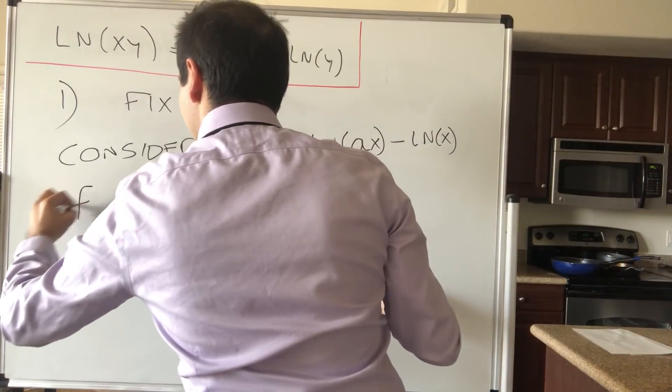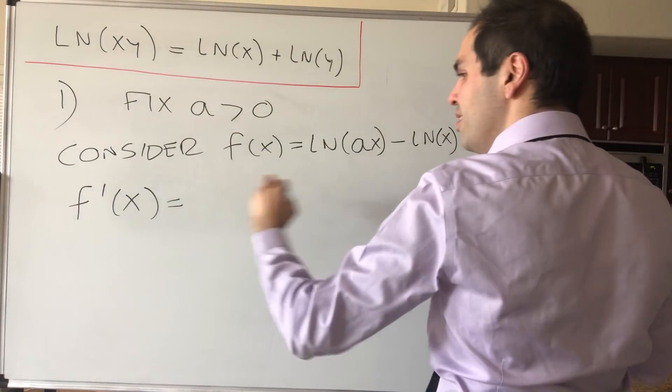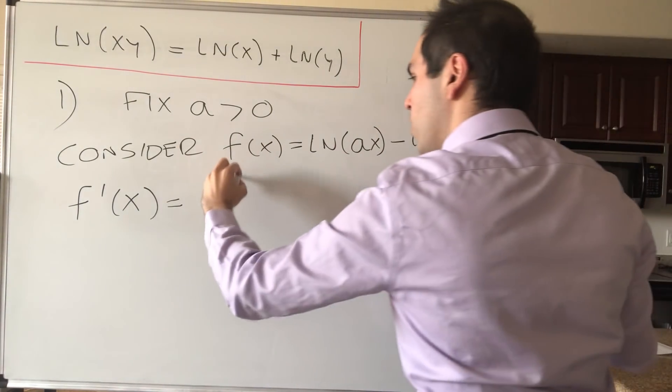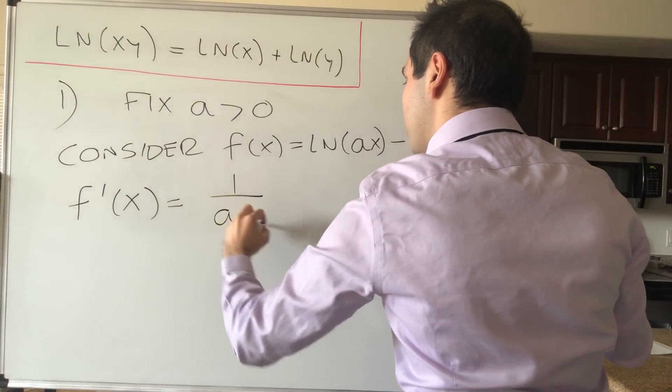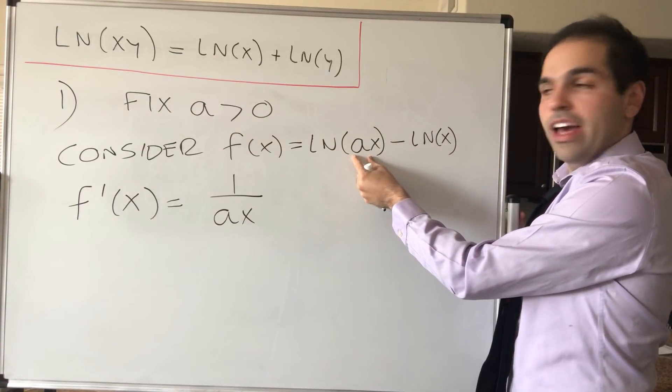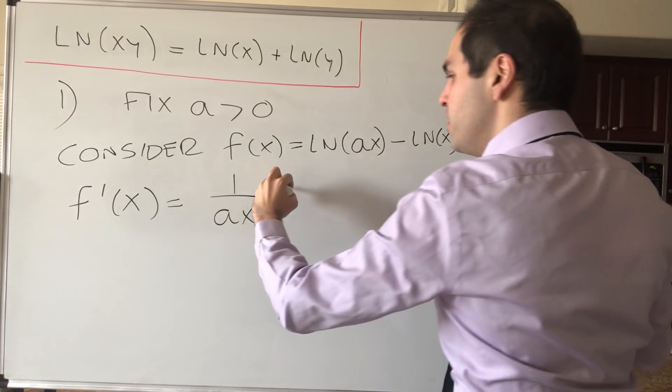So then f prime of x, again use the chain rule, that becomes derivative of ln, which we know to be 1 over x. So 1 over ax, and the derivative of ax with respect to x. Now remember, a is a constant, so this derivative is just a.